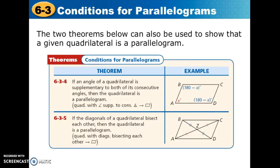Theorem 6-3-4 states: if an angle of a quadrilateral is supplementary to both of its consecutive angles, then the quadrilateral is a parallelogram. That means two angles that are next to each other, like A and B or like A and D, need to add up to 180. If they add up to 180, they're supplementary, and we can conclude that we have a parallelogram.